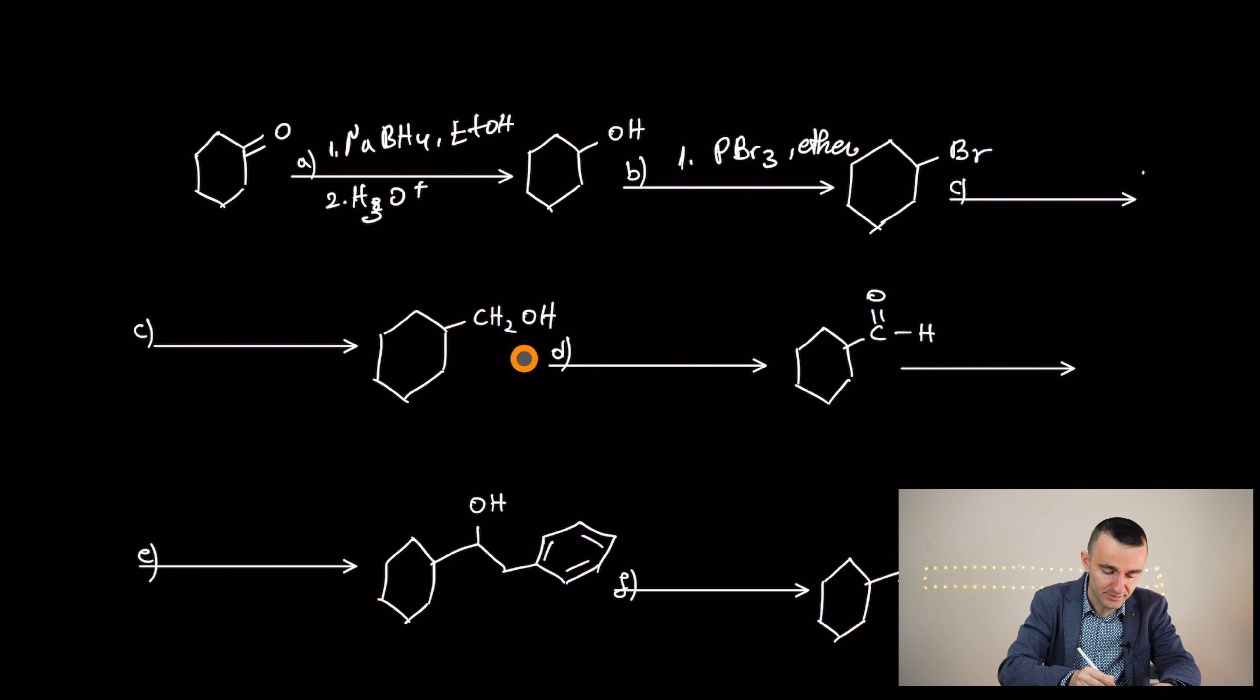So first one magnesium in ether. And the second one, we can add a formaldehyde that was the compound to yield primary alcohols.